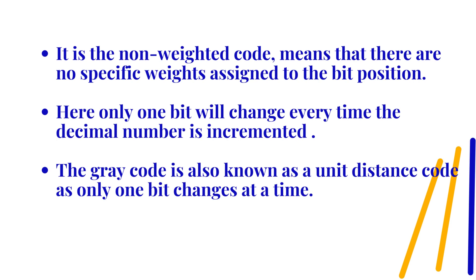Here only one bit will change every time the decimal number is incremented. The gray code is also known as a unit distance code as only one bit changes at a time.